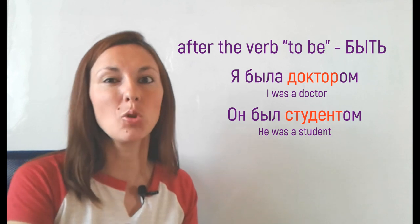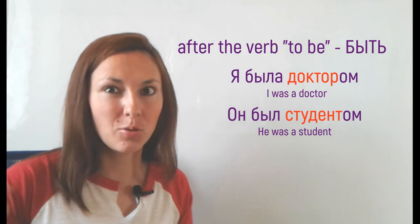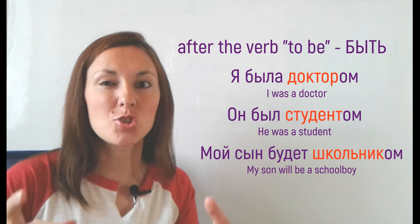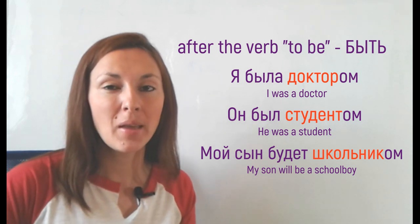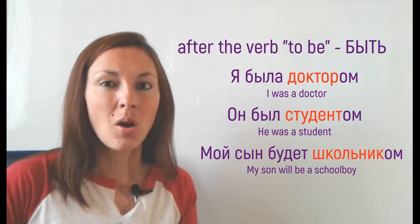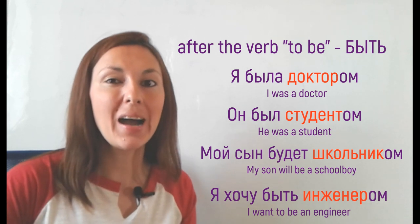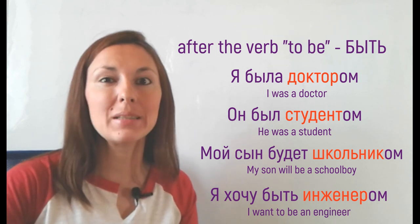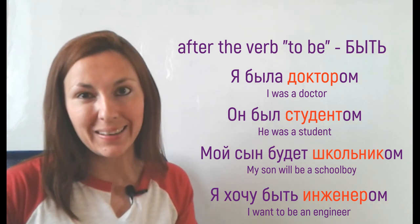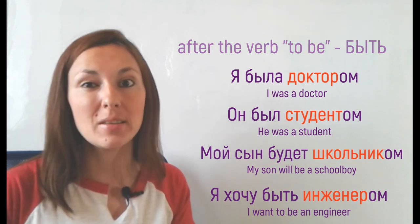Or МОЙ СЫН БУДЕТ, it is a future tense, МОЙ СЫН БУДЕТ ШКОЛЬНИКОМ. Again ШКОЛЬНИКОМ is a schoolboy, and I add ОМ. МОЙ СЫН БУДЕТ ШКОЛЬНИКОМ. Or Я ХОЧУ БЫТЬ ИНЖЕНЕРОМ. Быть is the infinitive form. Инженер is an engineer, and I add again ОМ. Я ХОЧУ БЫТЬ ИНЖЕНЕРОМ.